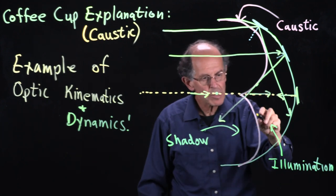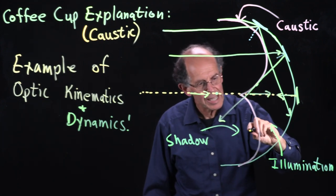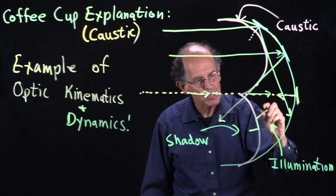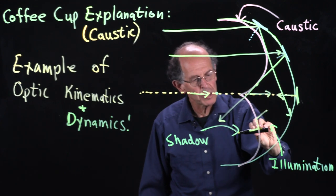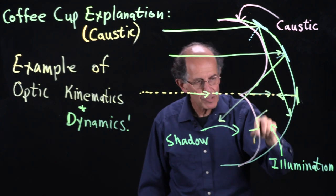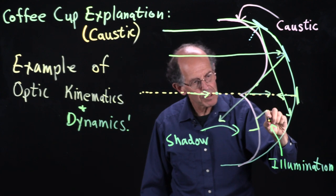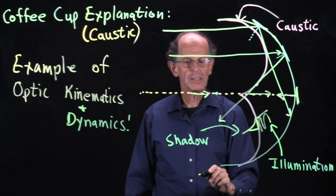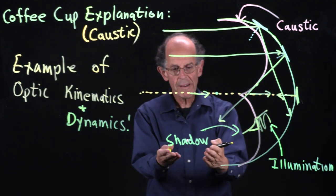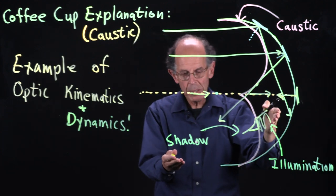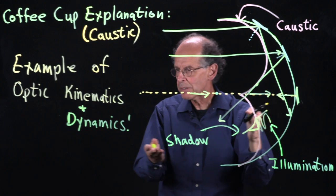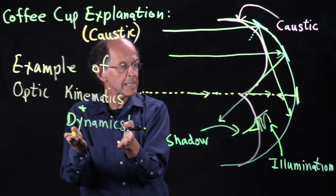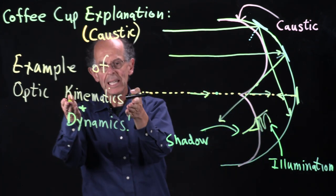Across this caustic boundary, it doesn't just go from illumination to shadow instantaneously. Rather, it oscillates up and down and then decays away into shadow. So we have a model of illumination transitioning into shadow. That's a hint about dynamics, and we've done kinematics.